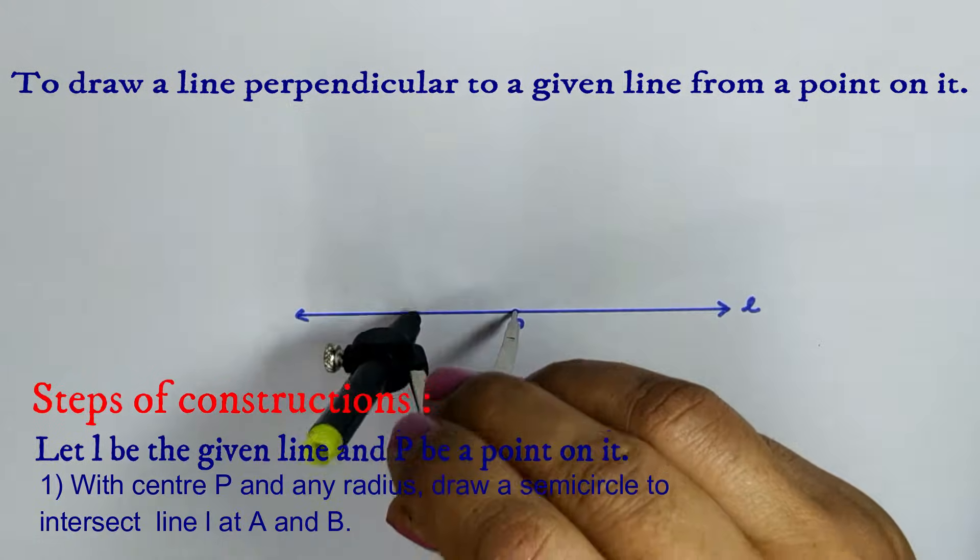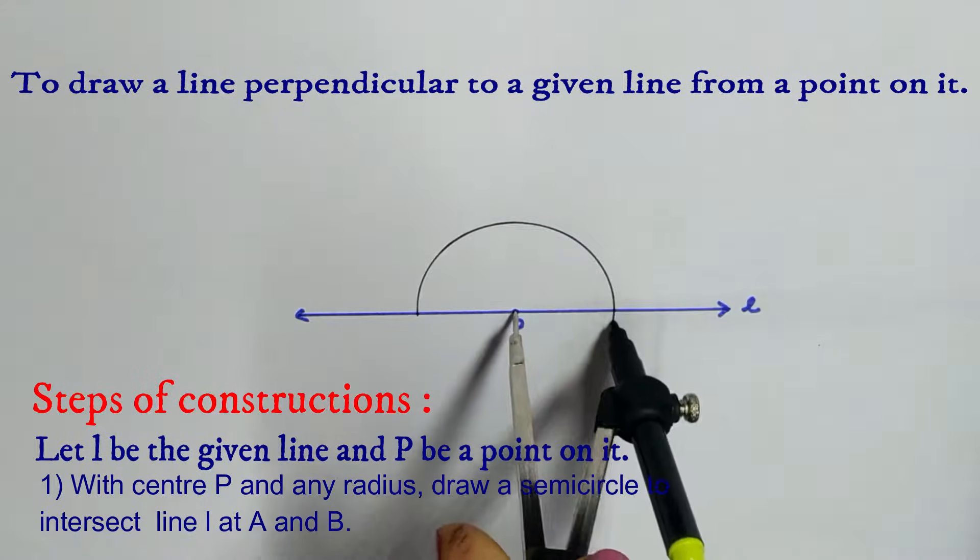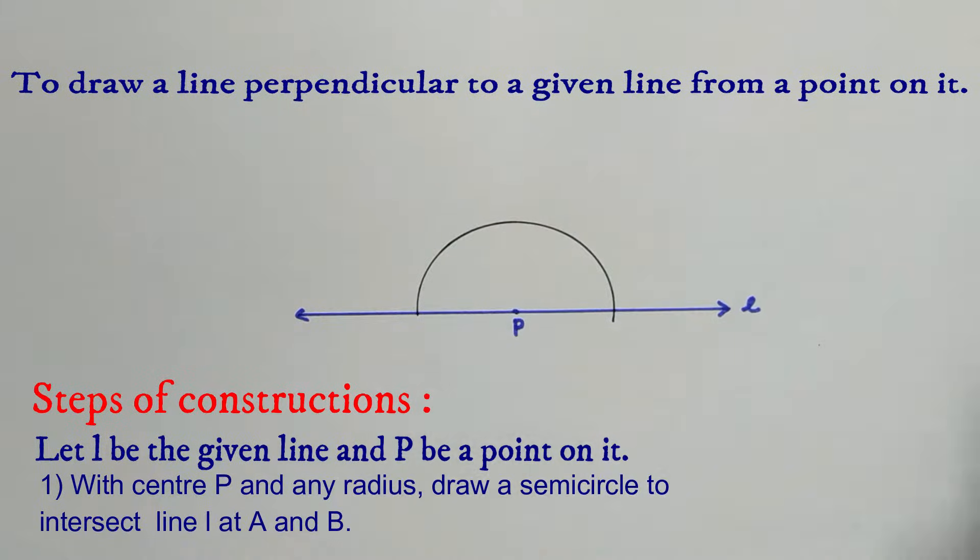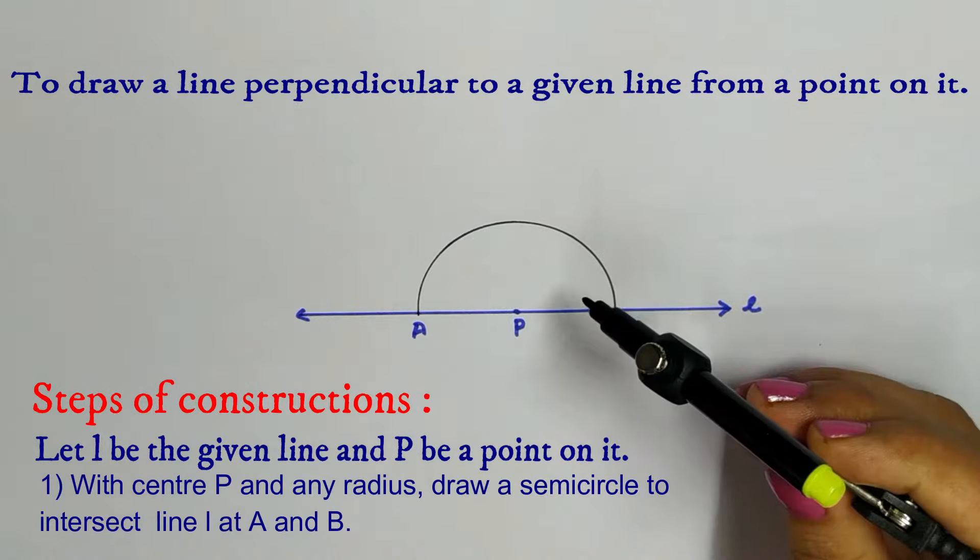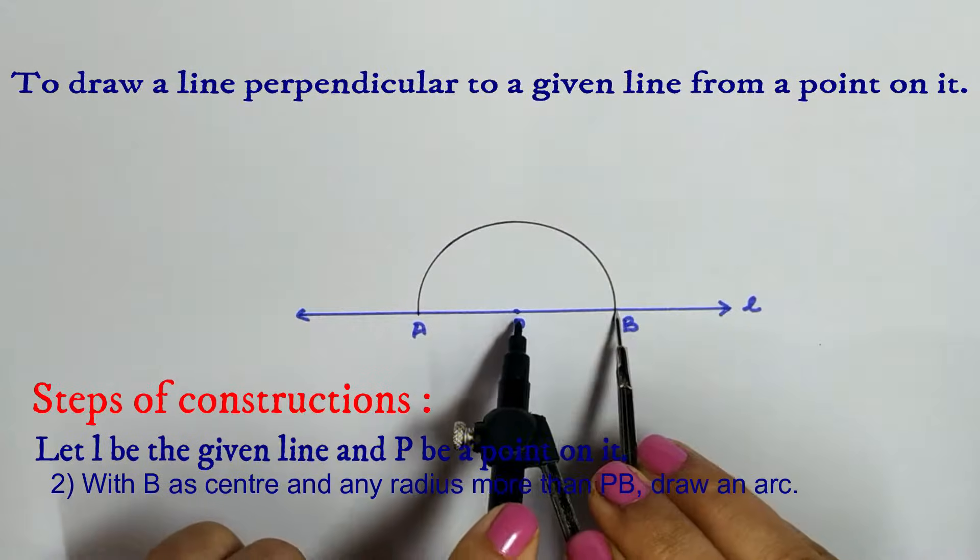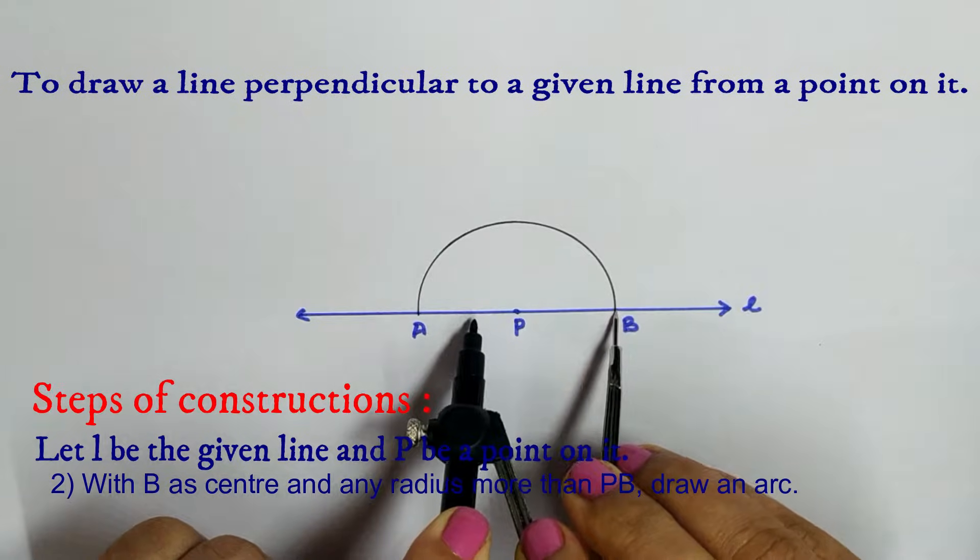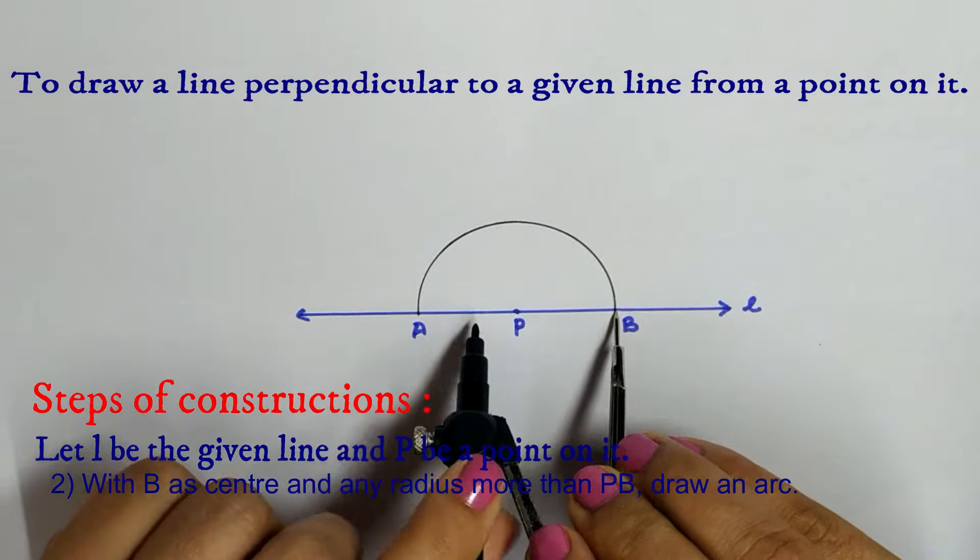With P as center and any radius draw a semicircle to intersect line L at A and B. With B as center and any radius more than PB draw an arc.